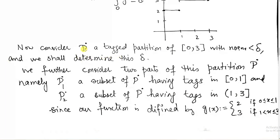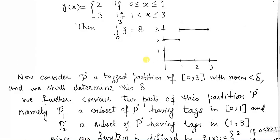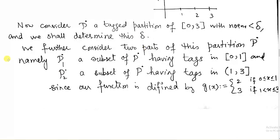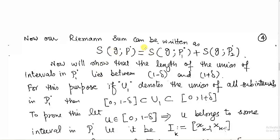Consider any tagged partition p-dot of the interval [0, 3] such that its norm is less than delta, which we shall determine later. We shall show that for every given epsilon > 0, we can always find a delta such that by making the norm of the partition less than that delta, the difference of Riemann sums and L can be made less than epsilon. We divide partition p-dot into two sub-parts: p1-dot, having tags in [0, 1] where g(x) = 2, and p2-dot, having tags in (1, 3] where g(x) = 3. The Riemann sum of g equals S(g, p1-dot) + S(g, p2-dot).